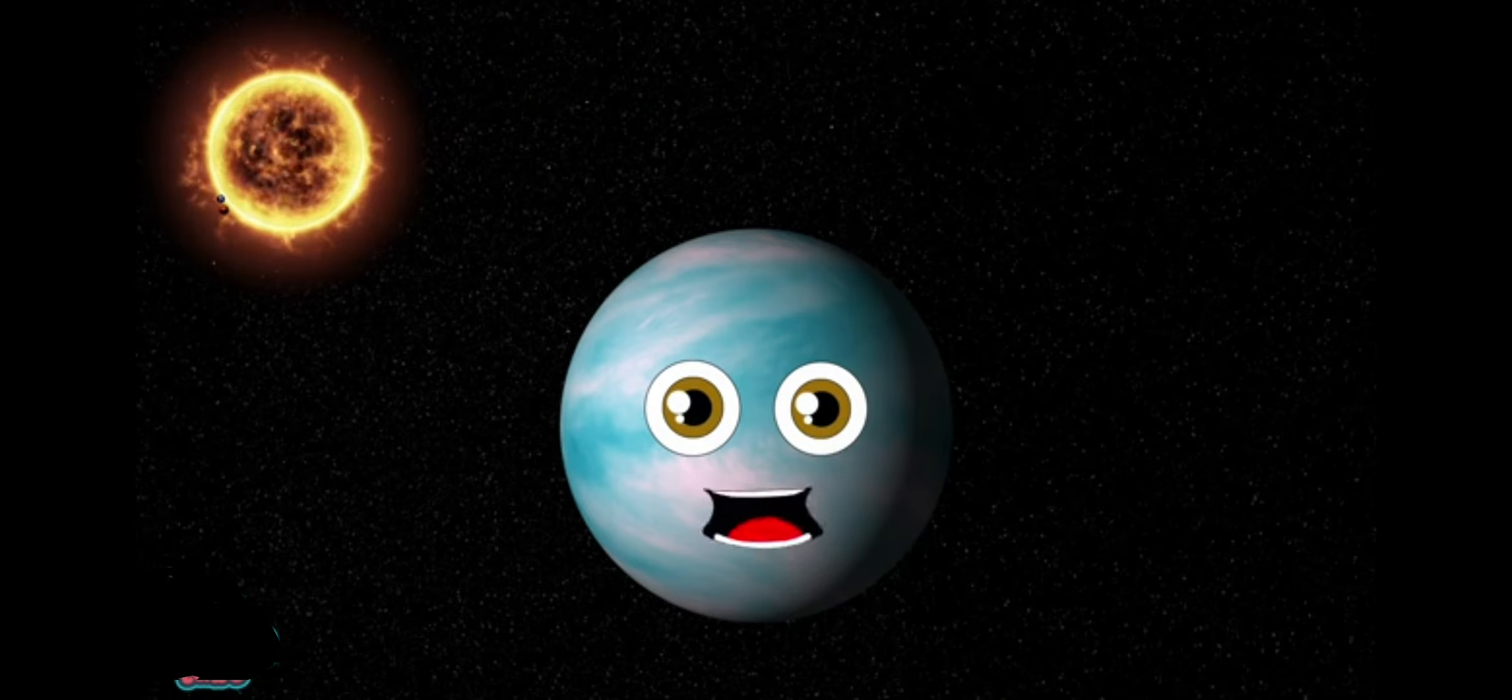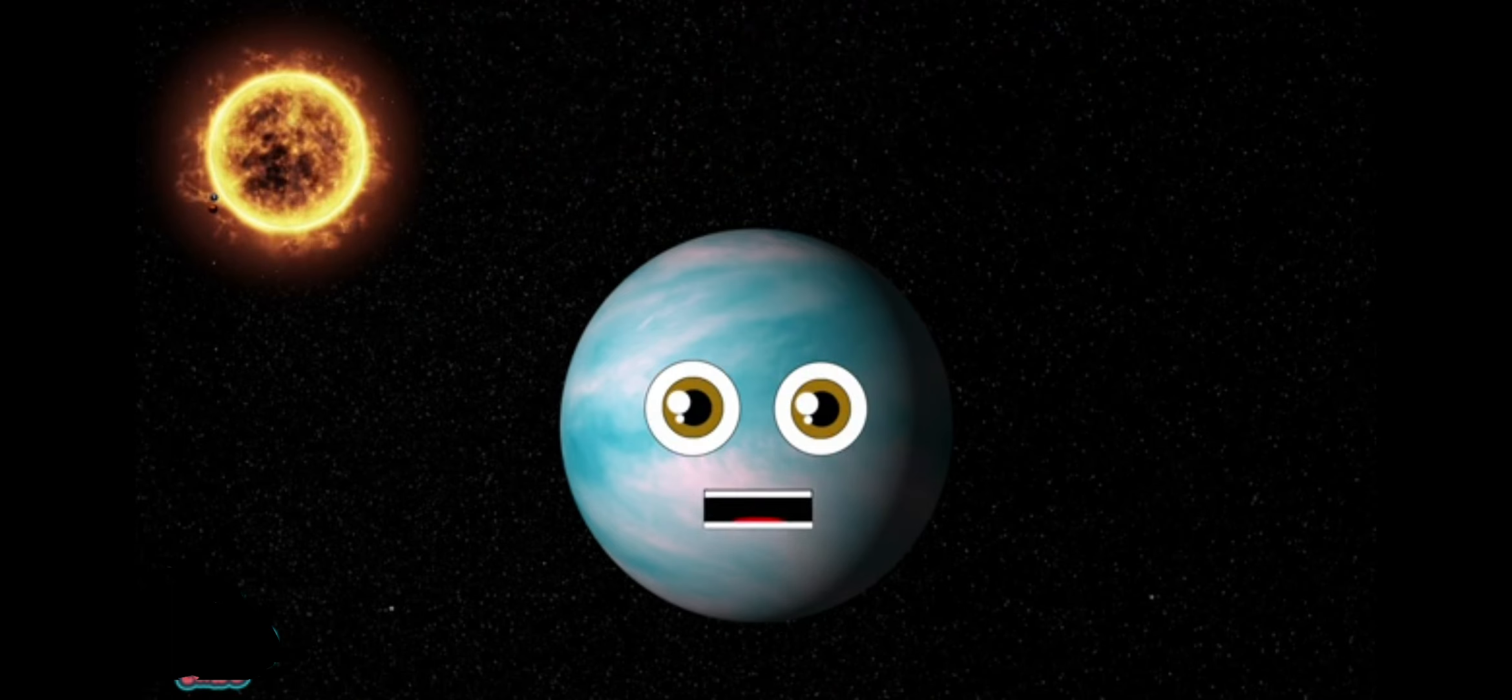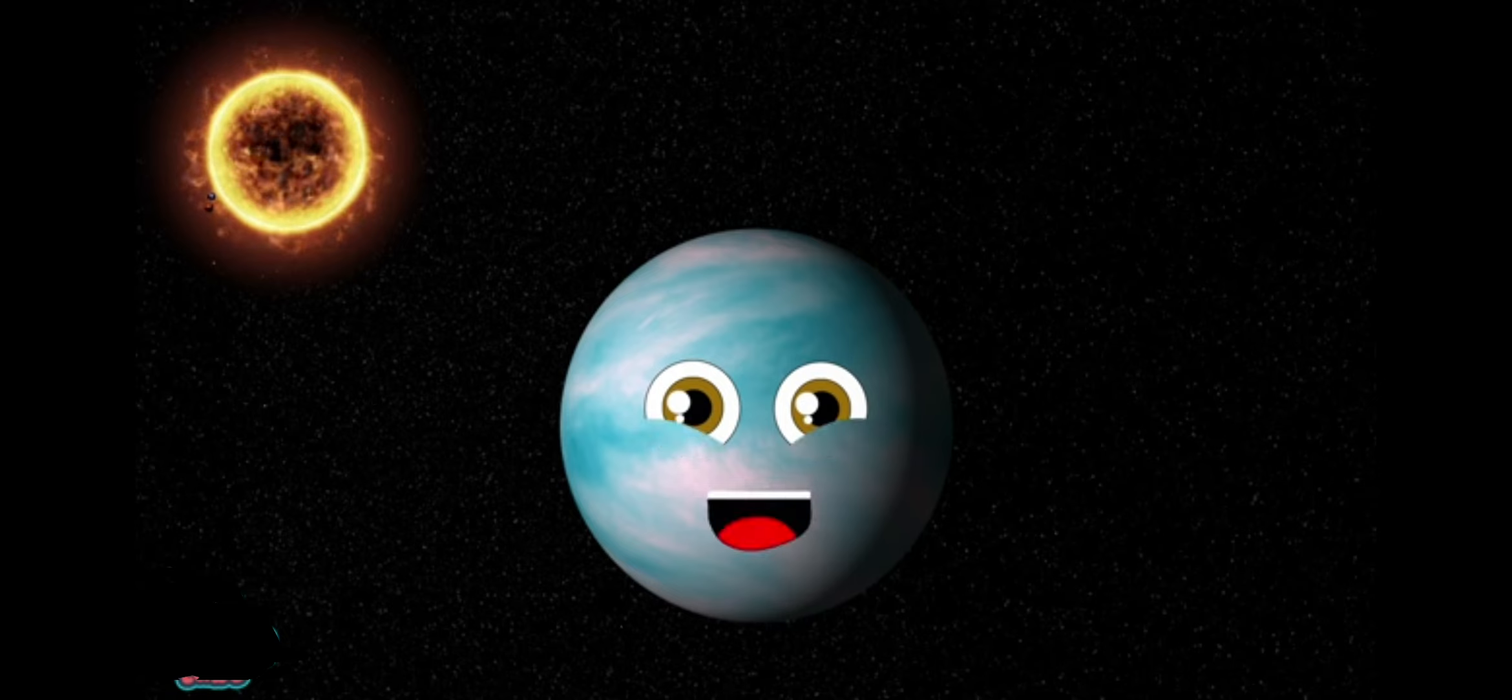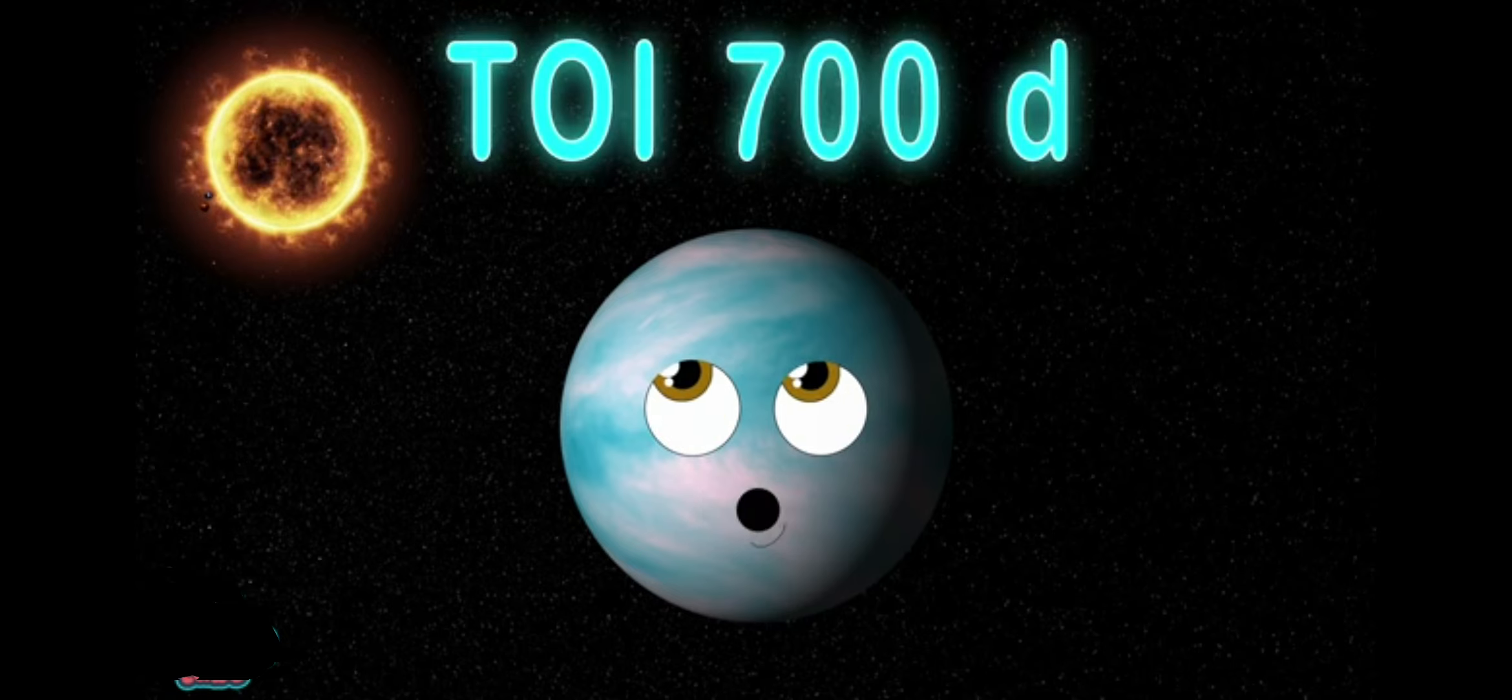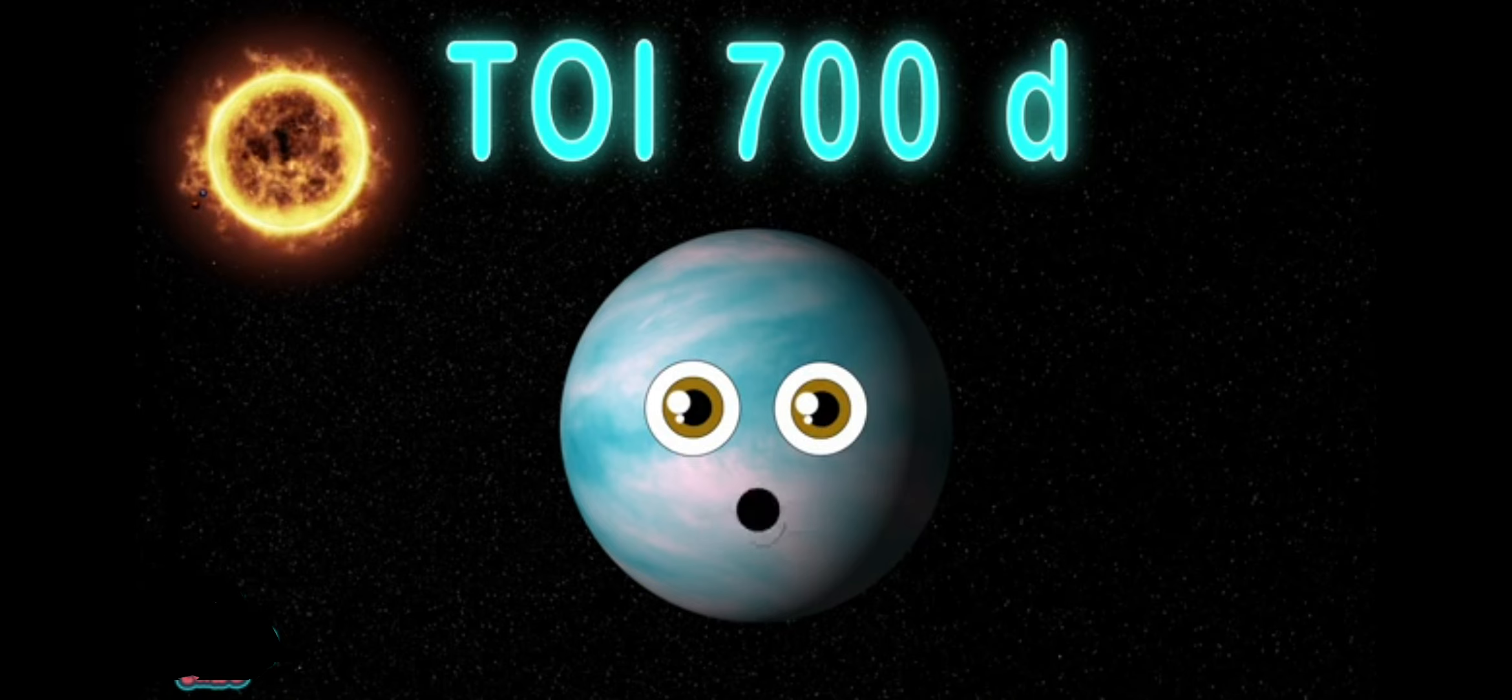My name is TOI-700d. An exoplanet outside the solar system I meet. 101.4 light years away from Earth. Let's learn about me.